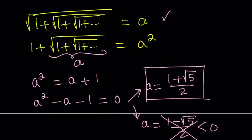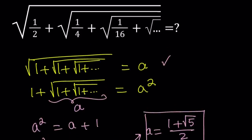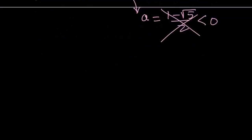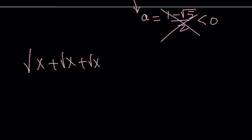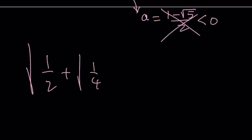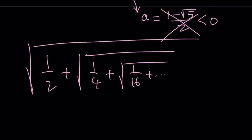So that particular infinite radical converges to 1 plus root 5 over 2 — by the way, this is the golden ratio. Now let's see how we can use this, because our expression is a little different. We don't have the same repeated term. Whenever you have a term x such as the square root of x plus the square root of x so on and so forth, you can solve it by setting it equal to something, as long as it converges. But here we have a different situation: the square root of 1/2 plus the square root of 1/4 plus the square root of 1/16, and so on. So by using our expression, we're going to do the following.